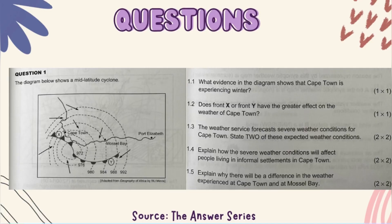Question 1.3: The weather service forecasts severe weather conditions for Cape Town. State two of these expected weather conditions. Please know all the weather conditions. Two of them is that there will be thunderstorms, strong winds, some of them even like gale winds, and another one you could mention is a possibility of snow due to the low temperatures.